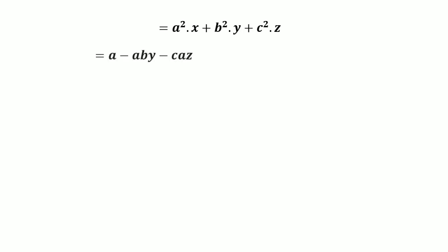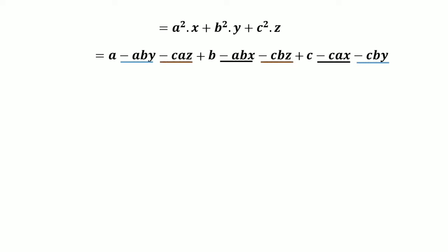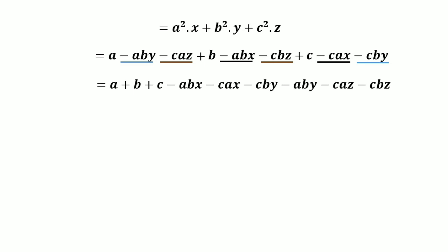Substituting all values into equation two, we get: (a minus ab·y minus ca·z) plus (b minus ab·x minus cb·z) plus (c minus ca·x minus cb·y). We now make some pairs as visible on the screen, then factor out common variables: (a plus b plus c) minus x times a times (b plus c), minus y times b times (c plus a), minus z times c times (a plus b).